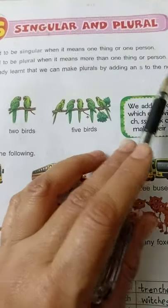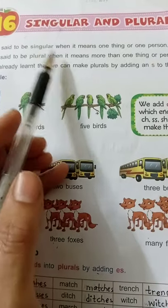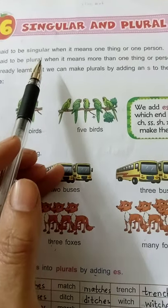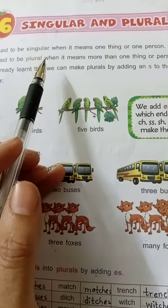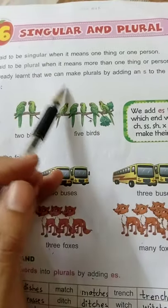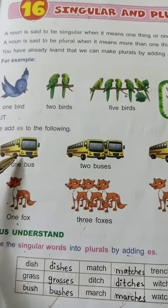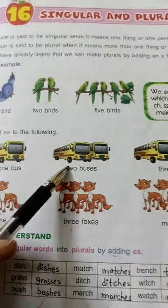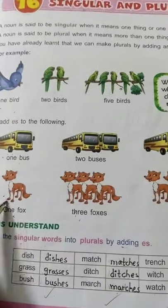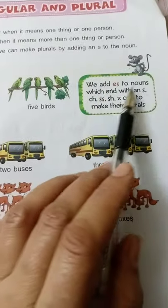Singular is used for one thing or one person. Plural is used for more than one thing or person. For example: one bird, two birds, five birds. One bus is singular; two buses, three buses. One fox, three foxes — we add -es to make these plurals.